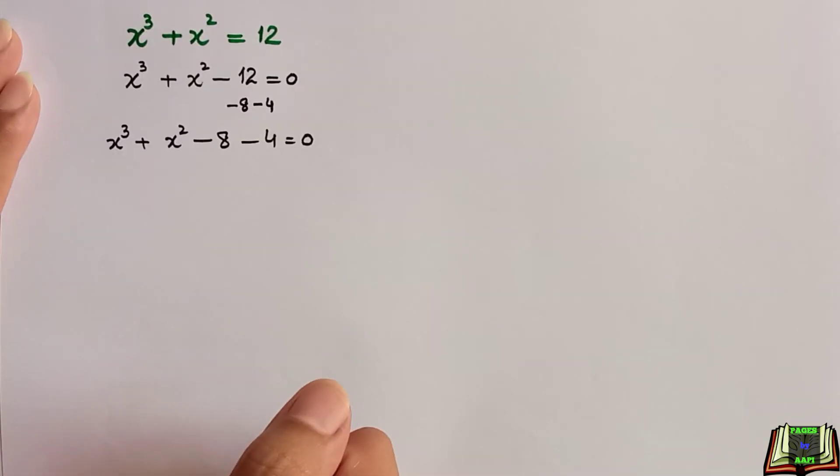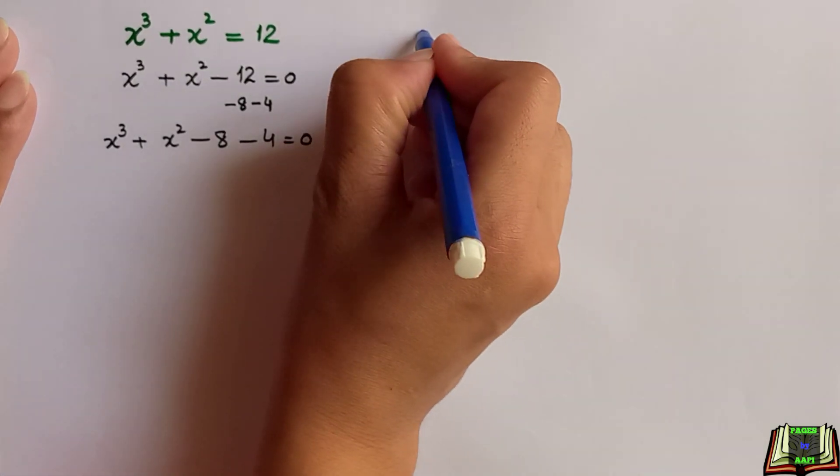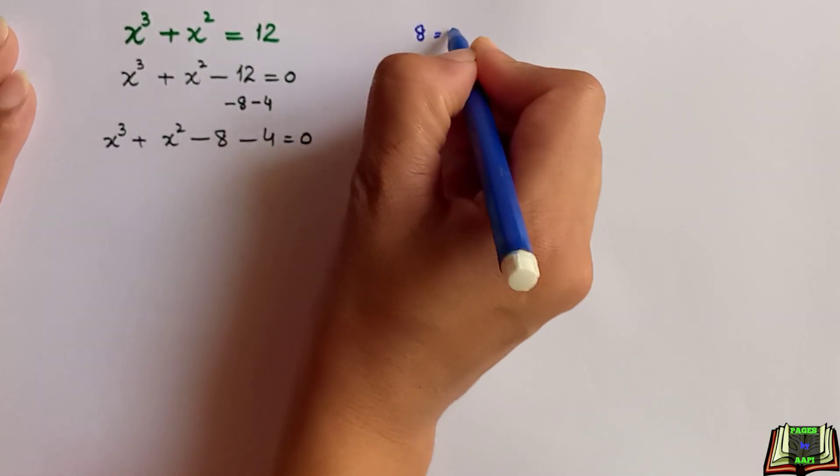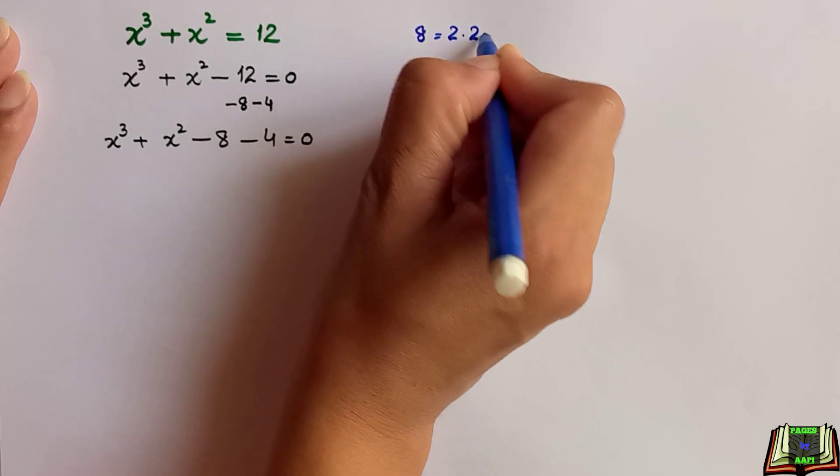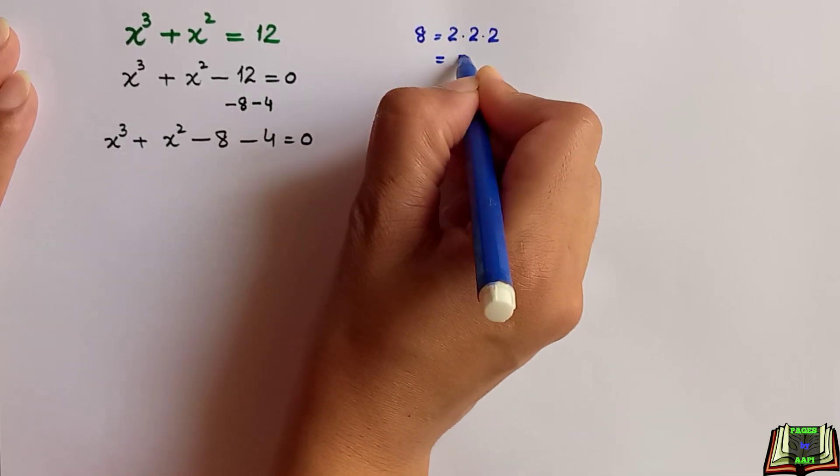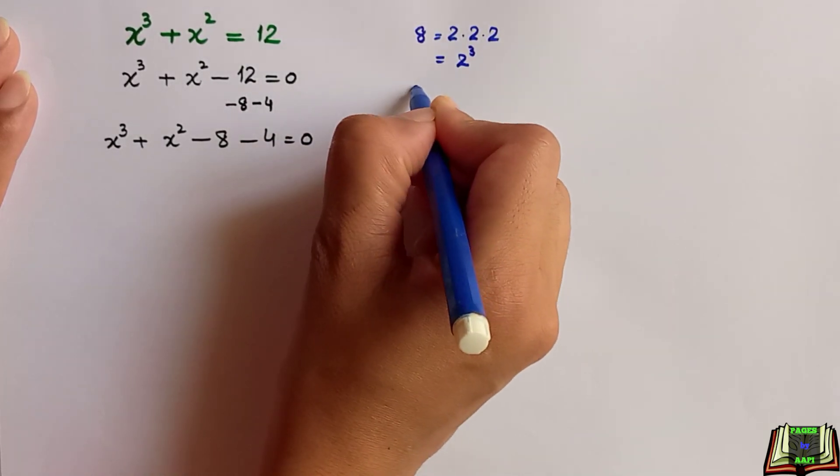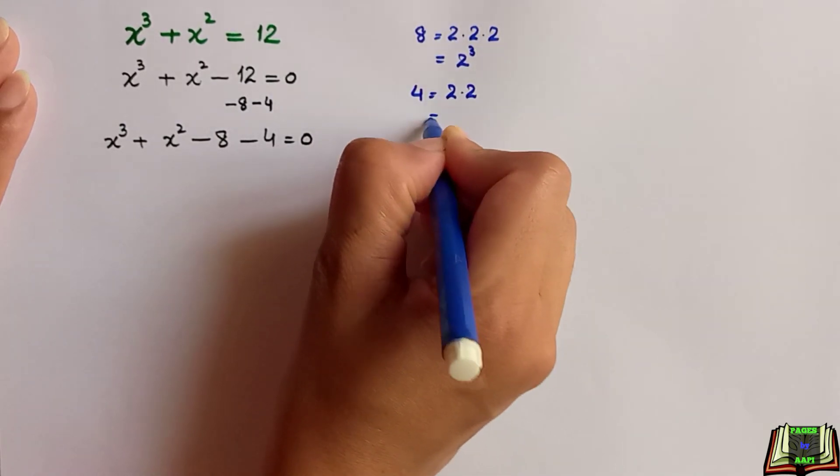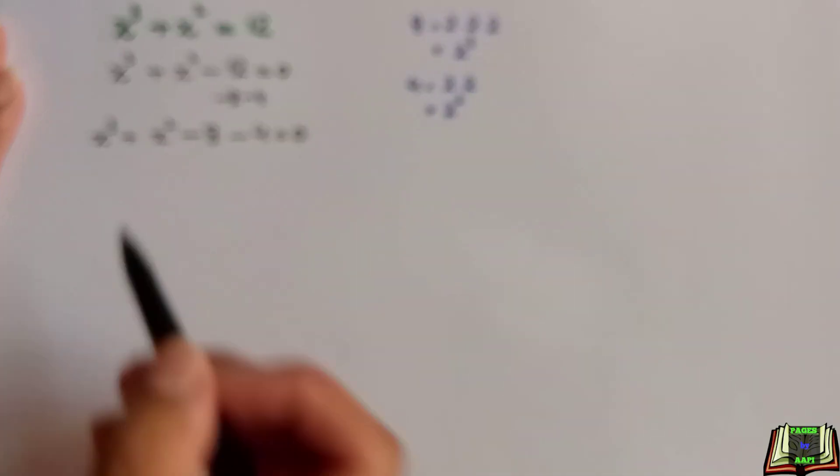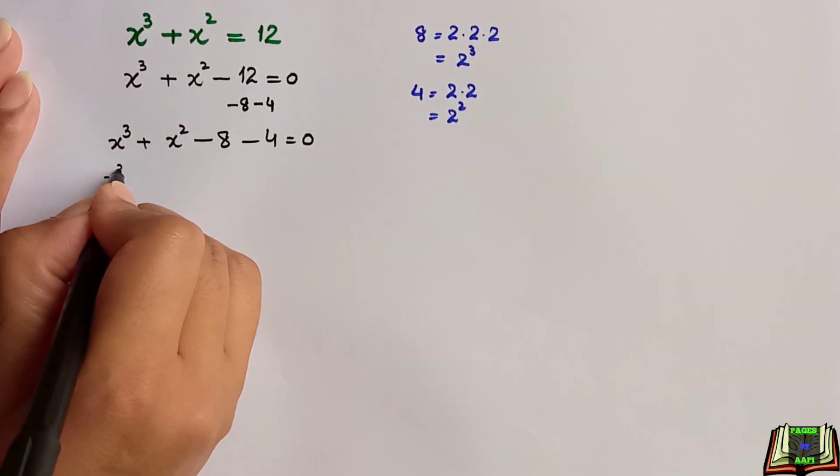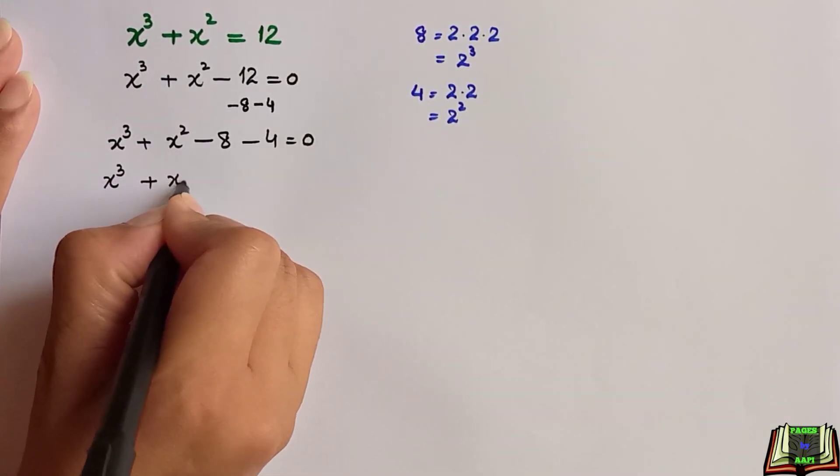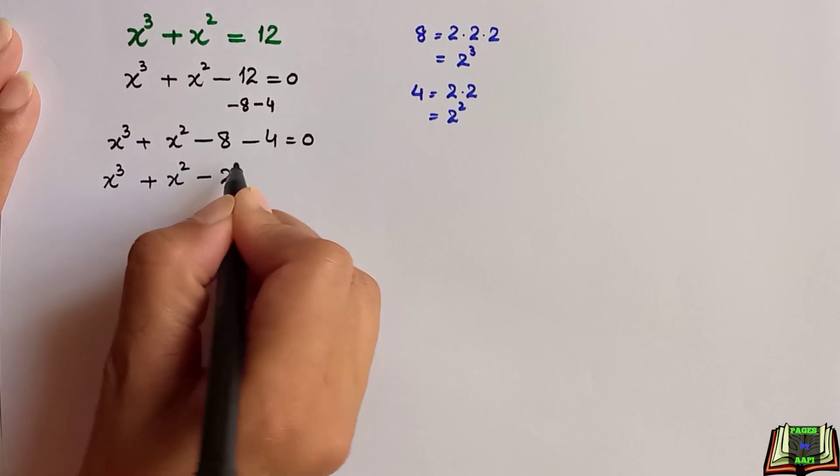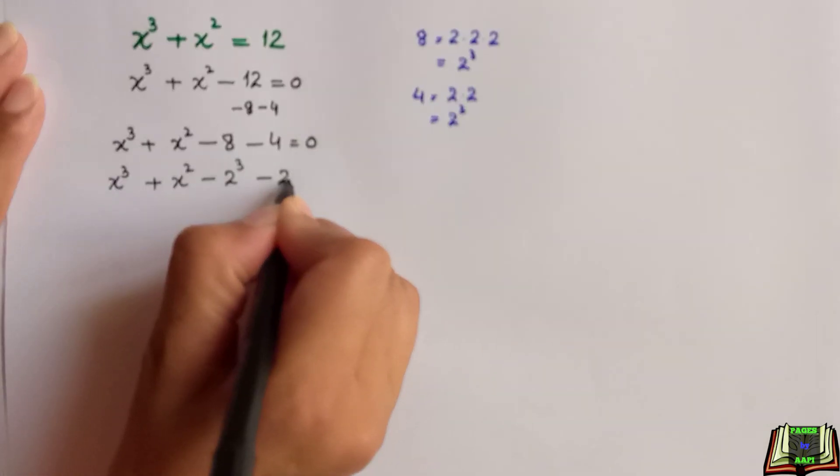We know that 8 is equal to 2 times 2 times 2, which is equal to 2 to the power 3. Similarly, 4 is equal to 2 times 2, which is equal to 2 to the power 2. So we are going to replace minus 8 as 2 to the power 3 and 4 as 2 to the power 2.